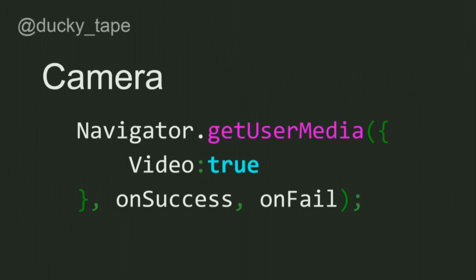Camera! There's this really handy thing — though this might be the deprecated version. You can just get your user's media. You ask the user if you can use their camera, hopefully they say yes, otherwise nothing's going to work. Then you have their camera — you can see things! This is the way pretty much all the libraries I've looked at recommend doing it. You can also capture sound by just setting audio to true.